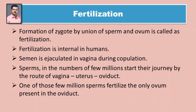Samagama chya veli strichya yoni margamadhe reta sakhalit kele jaate. Sperms in the numbers of a few millions start their journey by the route of vagina, uterus, to oviduct. One of those few million sperms fertilizes the only oocyte present in the oviduct. Yaamadhe ek shukranu and nalike madhe aslely ek mev andapeshiche phalan karte.